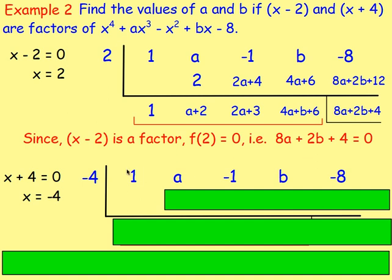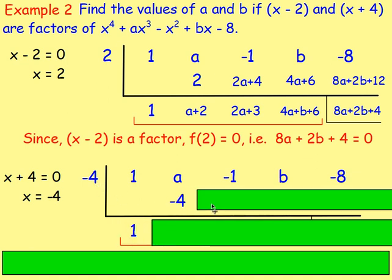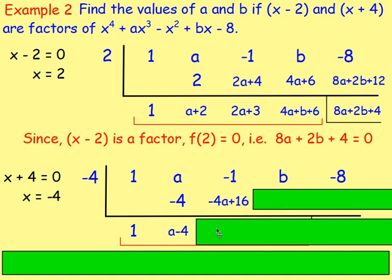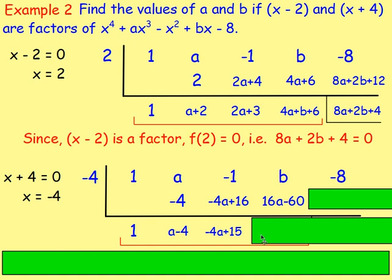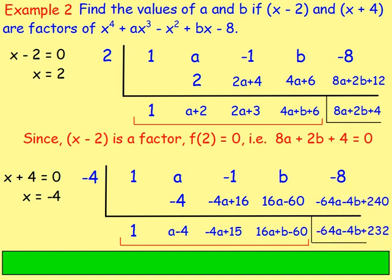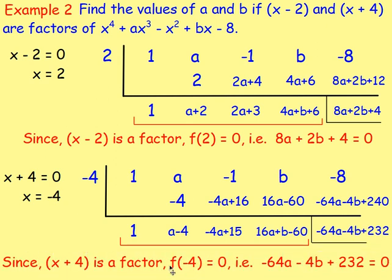Set up your L-shape again using synthetic division, with negative 4 to the left of this vertical line. Bring the 1 down — 1 add 0 is 1. Multiply through by negative 4, I'd have negative 4. Add the columns: a take away 4. Multiply by negative 4: negative 4a plus 16. Add the columns: negative 4a plus 15. Multiply each term by negative 4: gives me 16a take away 60. Add the columns: 16a plus b take away 60. Multiply through by negative 4, then add in this negative 8. I get negative 64a take away 4b plus 232. Because x plus 4 is a factor, if I divide the polynomial by it I will get 0 out for the remainder. So since x plus 4 is a factor, f(−4) — the negative 64a take away 4b plus 232 — must equal 0.